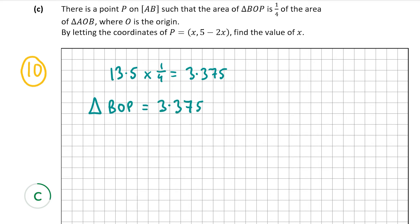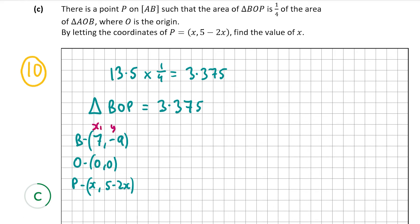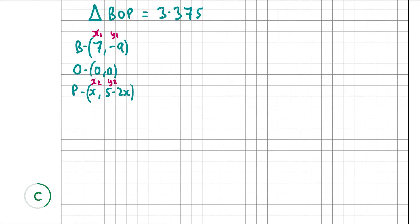We write down the vertices of triangle BOP: B = (7, minus 9), O = (0, 0), and P = (x, 5 minus 2x). Since one vertex is again the origin (0, 0), we can use the same formula. We label (7, minus 9) as (x1, y1) and (x, 5 minus 2x) as (x2, y2), then set the formula equal to 3.375 and solve for x.